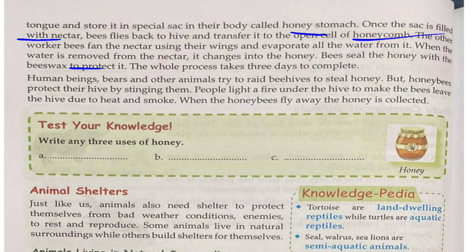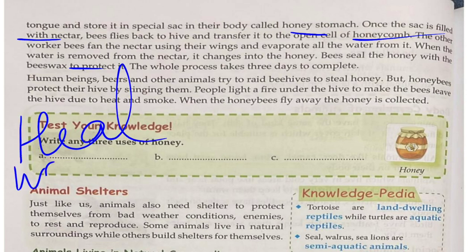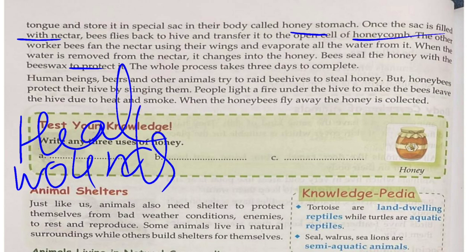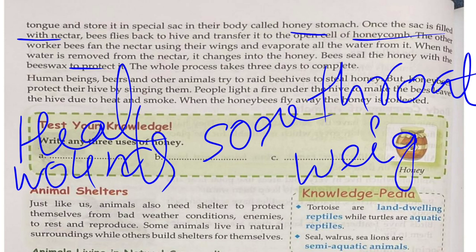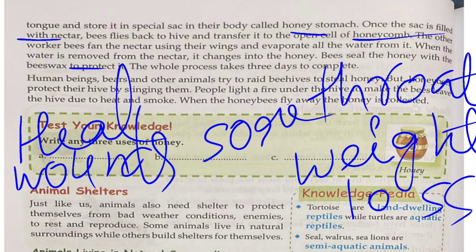Three uses of honey: first, it is used to heal wounds. Second, it soothes a sore throat — when our throat is bad, honey helps fix it. Third, it helps with weight loss — people drink lemon water with honey for this purpose.